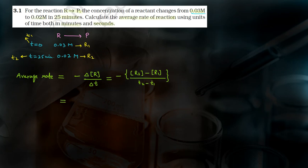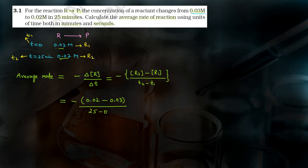Let's do it. Average rate equals to minus: R2 is 0.02, so 0.02 minus R1 which is 0.03, divided by T2 which is 25 minutes minus T1 which is 0. Inside we get minus 0.01 divided by 25. The two negatives cancel, leaving 0.01 divided by 25.